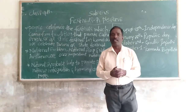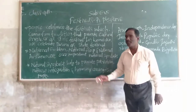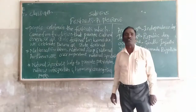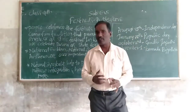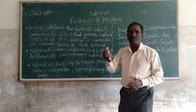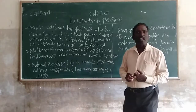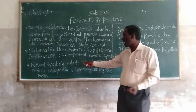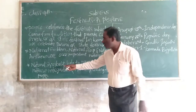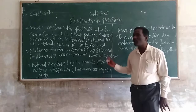National symbols like national flag, national anthem, and national flower are important national symbols. National symbols help to promote patriotism and national integration and harmony among the people.